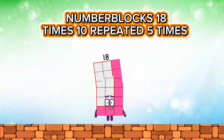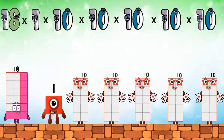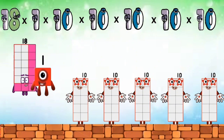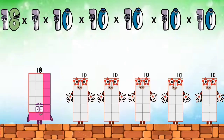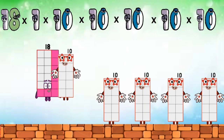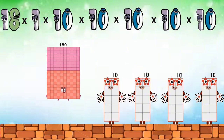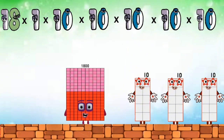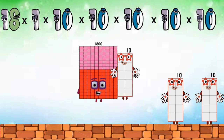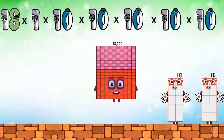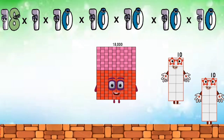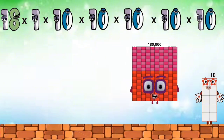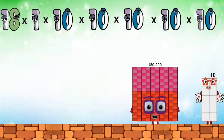Number blocks eighteen times ten, repeated five times. Eighteen. One hundred eighty. One thousand eight hundred. One hundred eighty thousand.